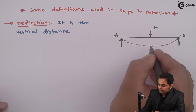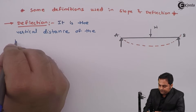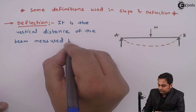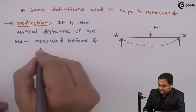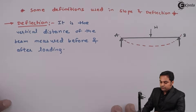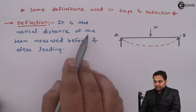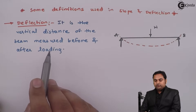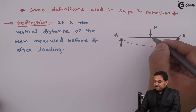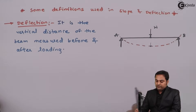Deflection is the vertical distance of the beam measured before and after loading. Before loading the beam is at its original position, and after loading it will reach a lower location. That distance is called deflection.